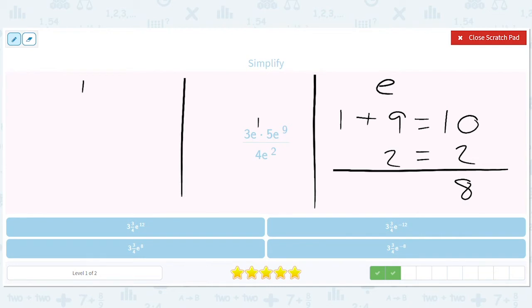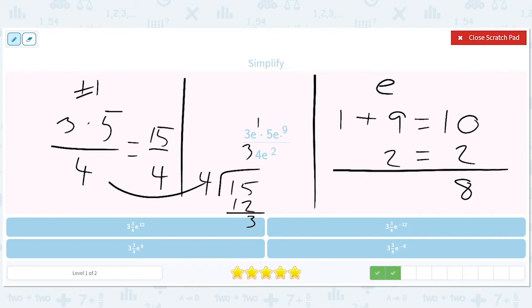And on the right, we'll have our number, which is three. Sorry, I said right and I pointed to the left. Sorry, guys. It's one of those days. Three times five divided by four equals 15 fourths. So we're going to have 15 fourths e to the eighth. Now they want this in a mixed number form. So 15 fourths is the same as if we divide 15 divided by four, we'll get three. There'll be a remainder of three. So it'll be three and three fourths e to the eighth.